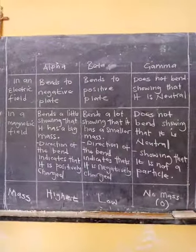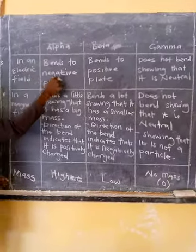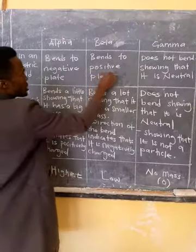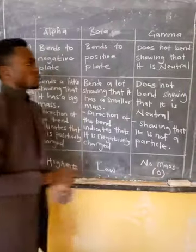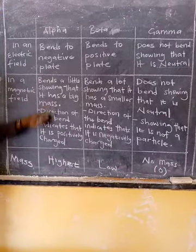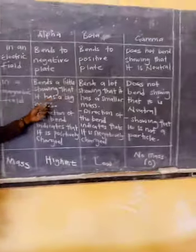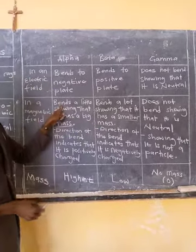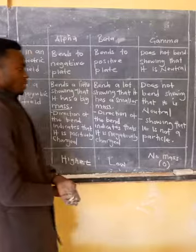Summarizing behavior in fields: in an electric field, alpha bends towards the negative plate because it is positively charged, beta bends towards the positive plate because it is negatively charged, and gamma continues in a straight line as it is neutral. In a magnetic field, alpha bends showing it has a larger mass, beta bends more showing it has a smaller mass compared to alpha, and gamma does not bend — it moves in a straight line.